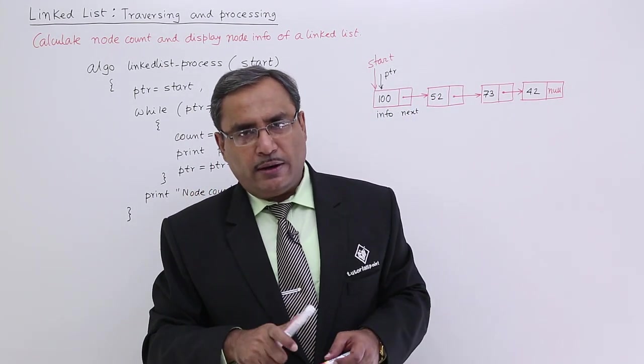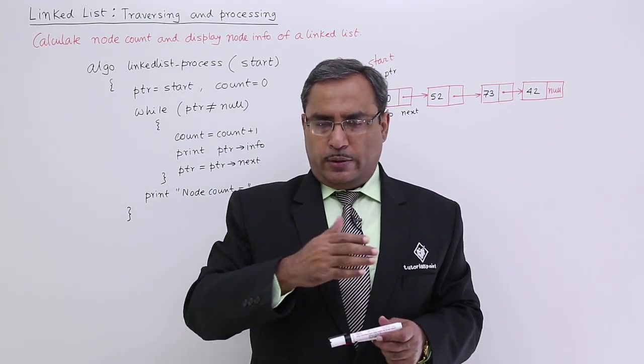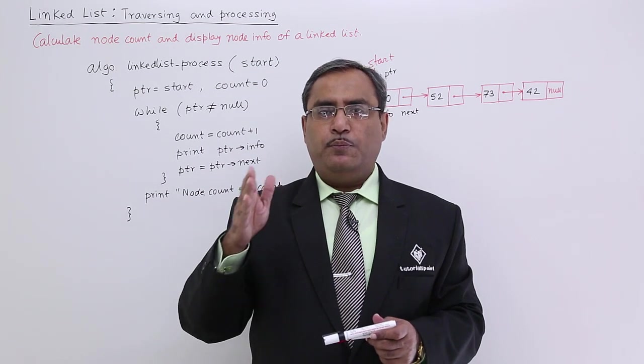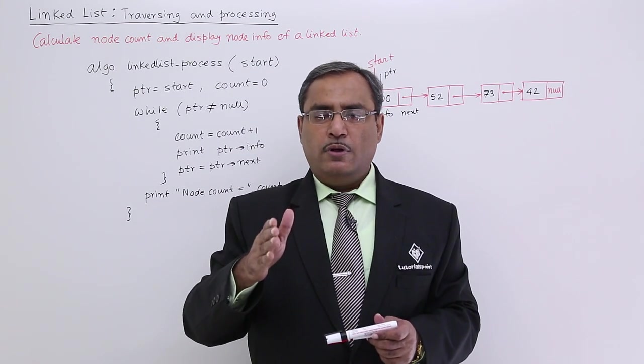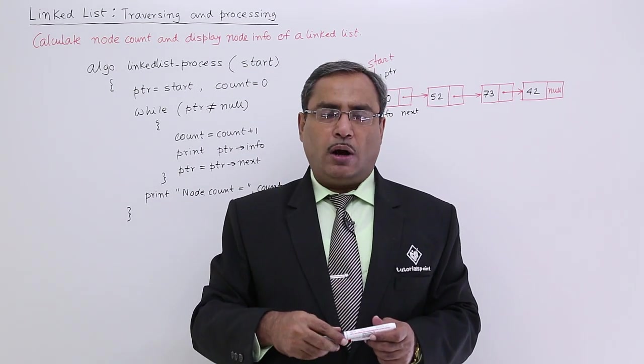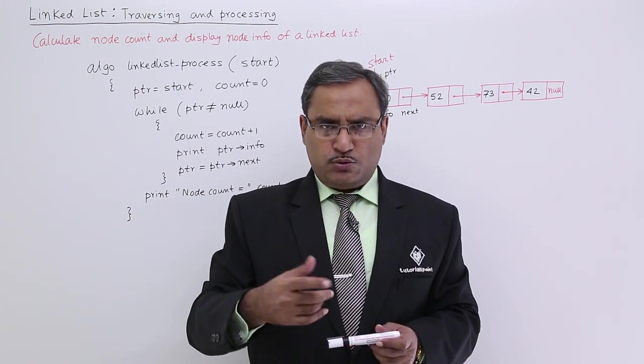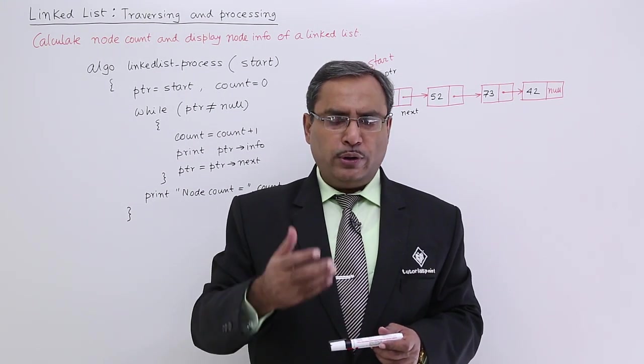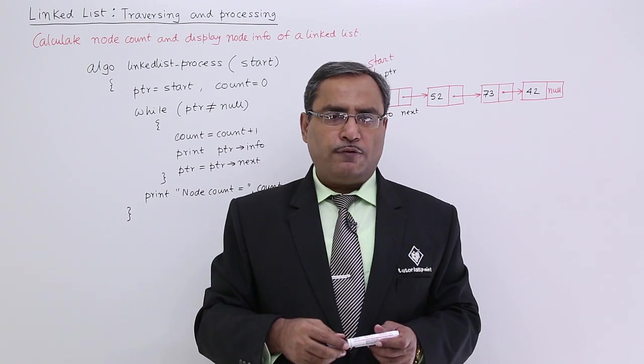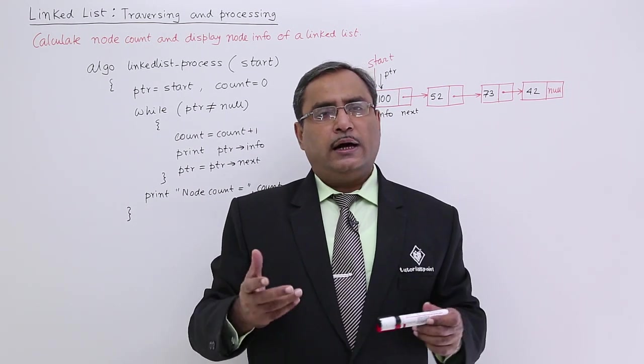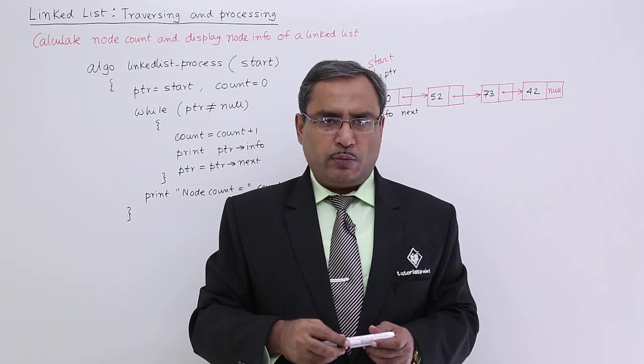Control will come out from the while and it will print this node count. This is a very simple algorithm. In this way, we can traverse through a linked list, we can print the node info, we can calculate the node count and you can do other operations also. Please watch the next video where we are going to calculate the maximum node info, minimum node info and other parameters. Thanks for watching this video.